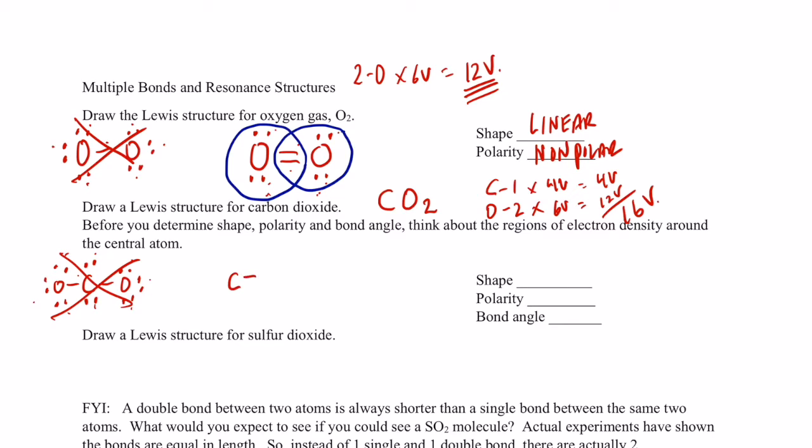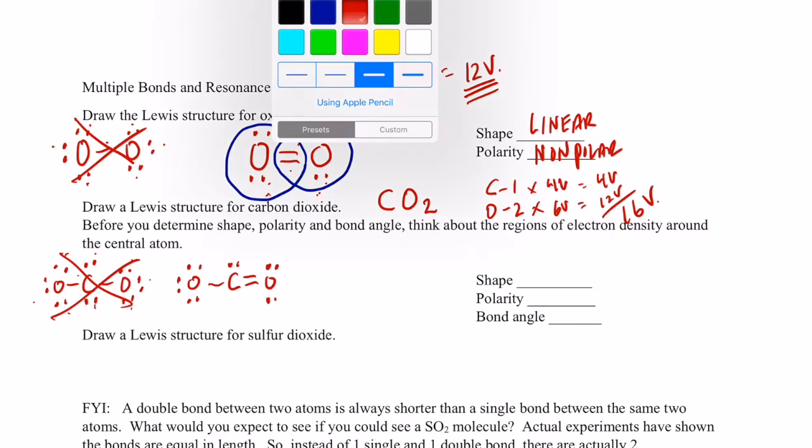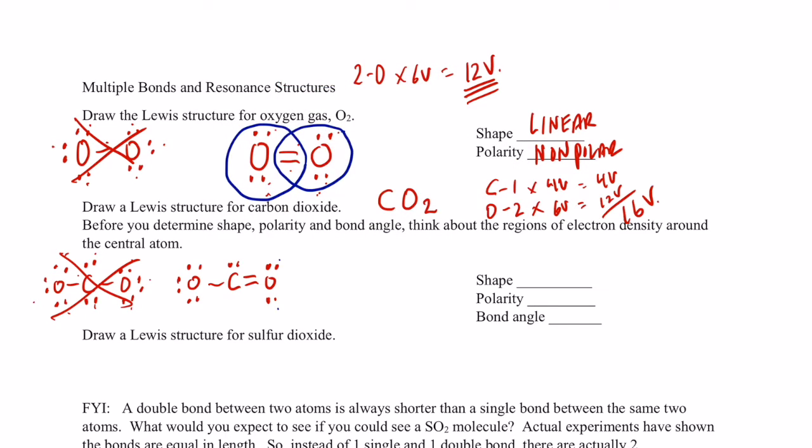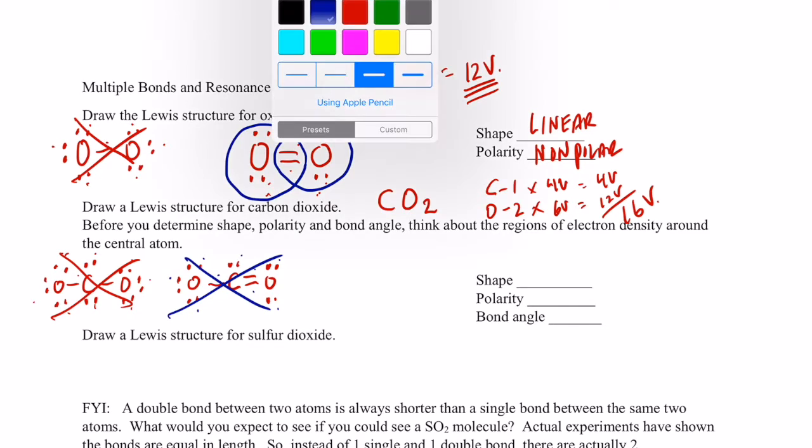So you might want to try a double bond like we did above. One double and one single bond. Then this carbon just needs one more pair. This oxygen needs two more pairs to complete its octet, and this one would need three more pairs. So let's see how many we've used here. We've used 2, 4, 6, 8, 10, 12, 14, 16, 18. Nope, only allowed sixteen. So that doesn't work.